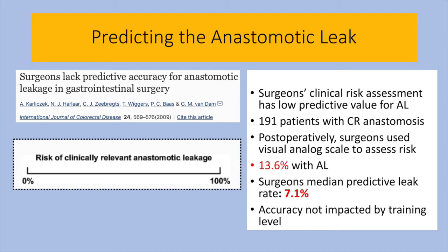A notable paper by Karliczek from 2009 presents a study of 191 patients who underwent a colorectal anastomosis. Surgeons were asked immediately post-op to predict the risk of a clinically relevant leak by using a visual analog scale from 0 to 100%. 13.6% of the patients had leaks, but surgeons only accurately predicted these leaks 7.1% of the time. The accuracy of assessment did not correlate with clinical experience. What this tells us is that our traditional methods are not good enough to identify the riskiest anastomosis, and more qualitative data is warranted.